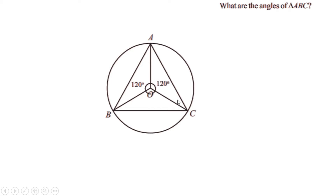So the angles opposite to them are also equal — these two angles are equal. This angle is 120 degrees. Then what is the sum of the other two angles? That is, 180 minus 120, or 60 degrees. And since these two angles are equal, each angle is equal to 30 degrees.